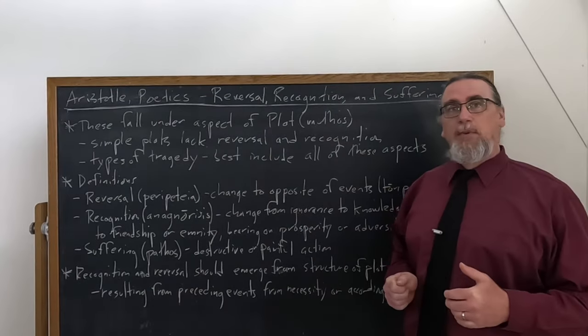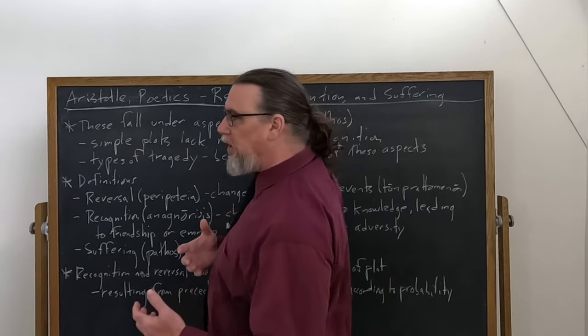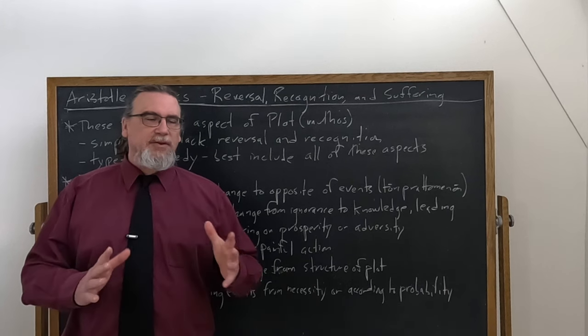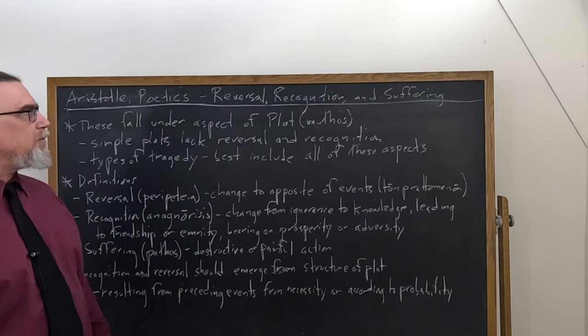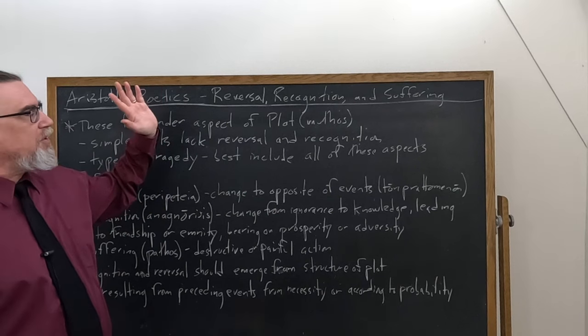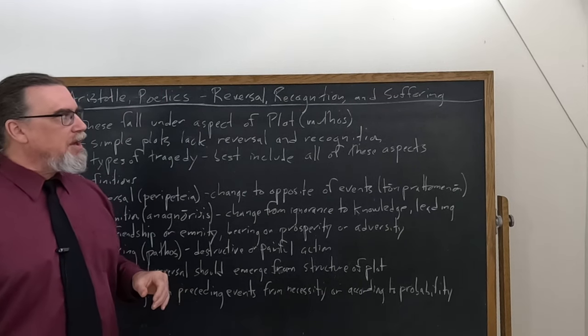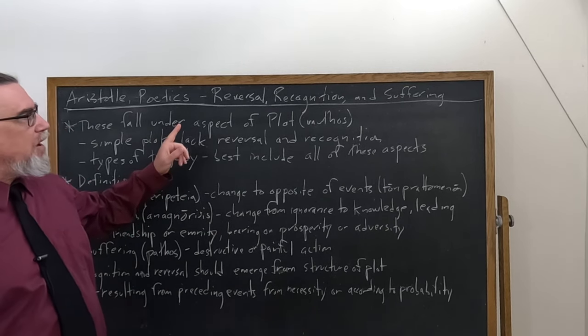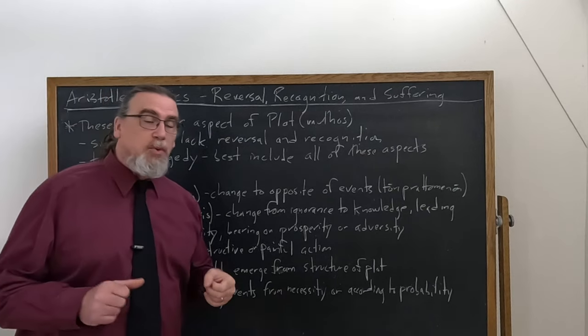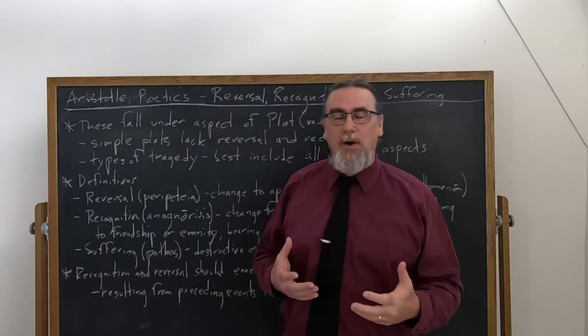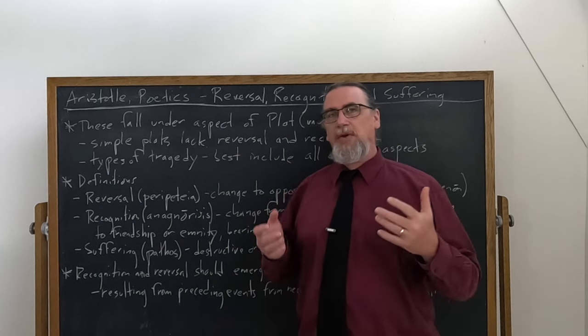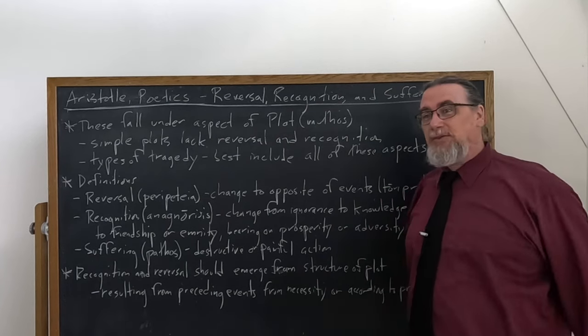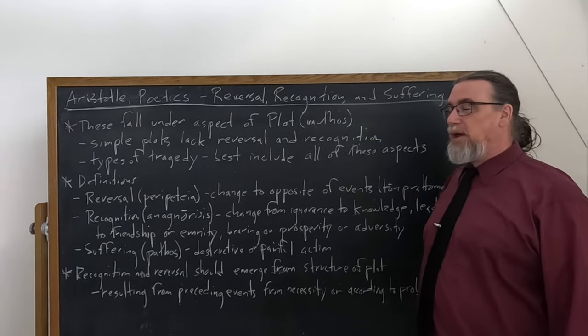In his work, The Poetics, Aristotle is going to discuss three closely related aspects of tragedies as he understands them, the way that they ought to be. We typically call these reversal, recognition, and suffering. And these are three important aspects that apply to the most important dimension or aspect or part of tragedy as a whole. And that's what he calls plot or muthos, literally story. So how is the story being developed?